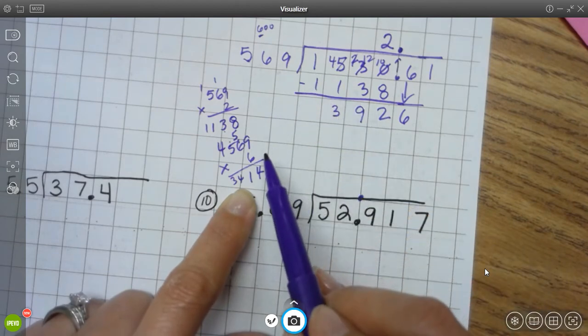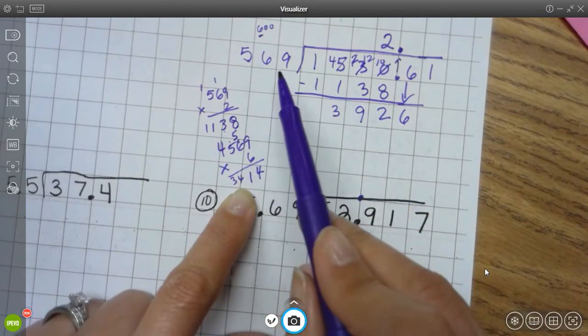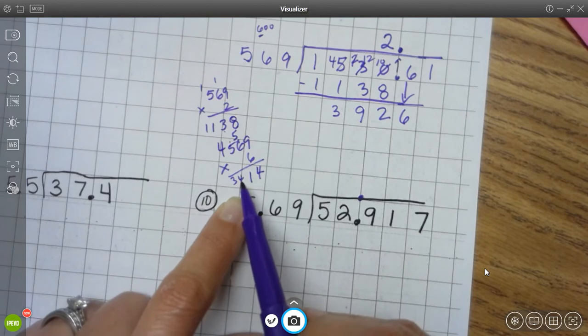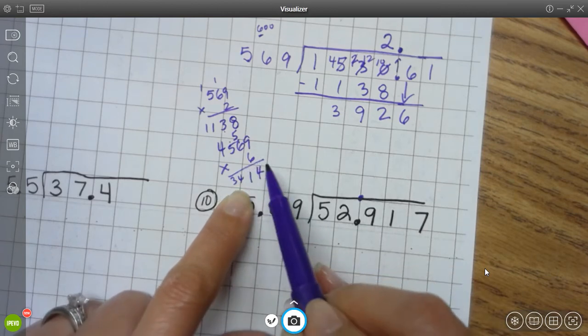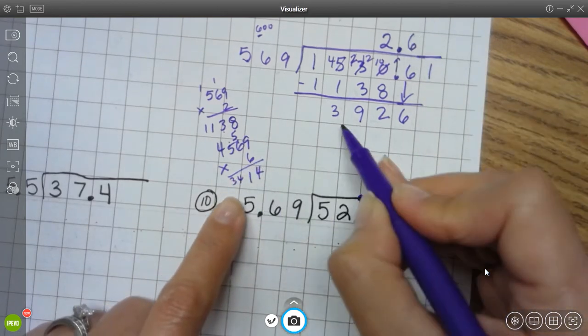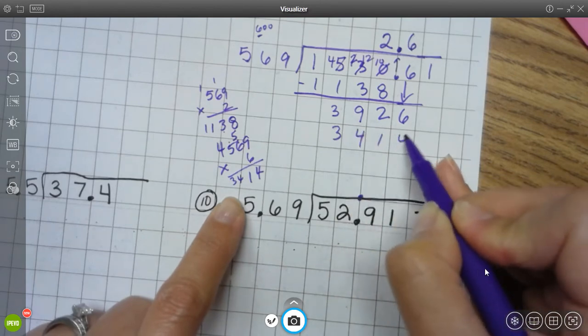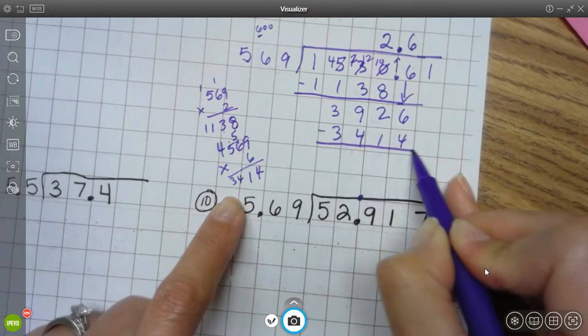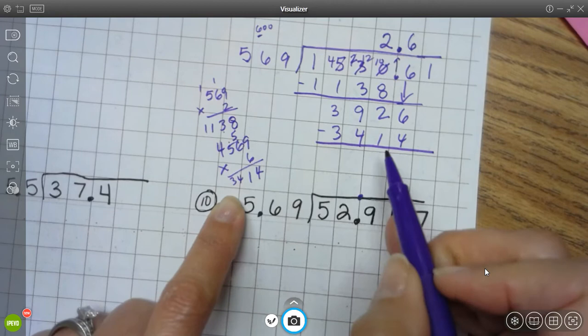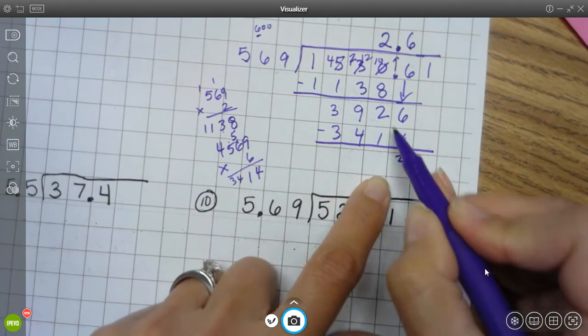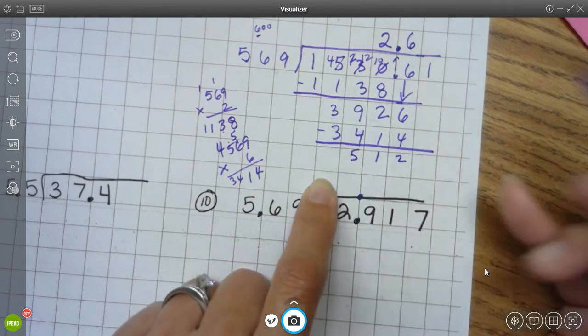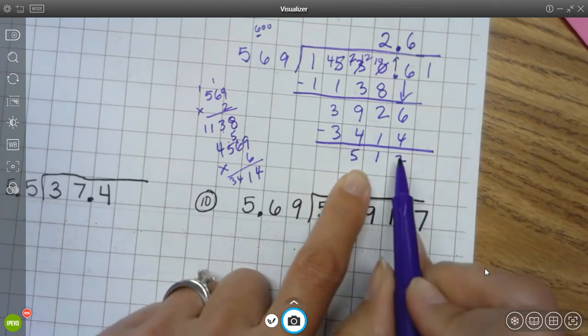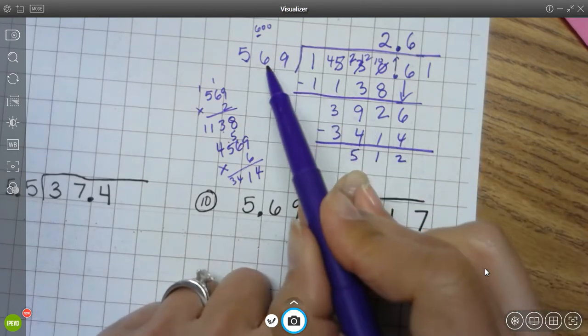Because if I were to do an add on another 569, if I add 500, that's going to be 3,900. That'll go over. So, it's 569 times 6. So, 3, 4, 1, 4. And actually, I can check my work here. If I would have been able to fit in another 569, I'll find out when I do this. 6 minus 4 is 2. 2 minus 1 is 1. 9 minus 4 is 5. 3 minus 3 is 0. I don't have to add anything. Yep, this number is smaller than this number, so I'm good to go.